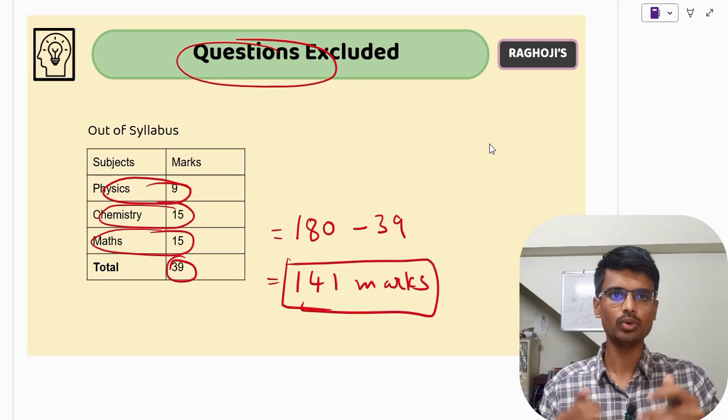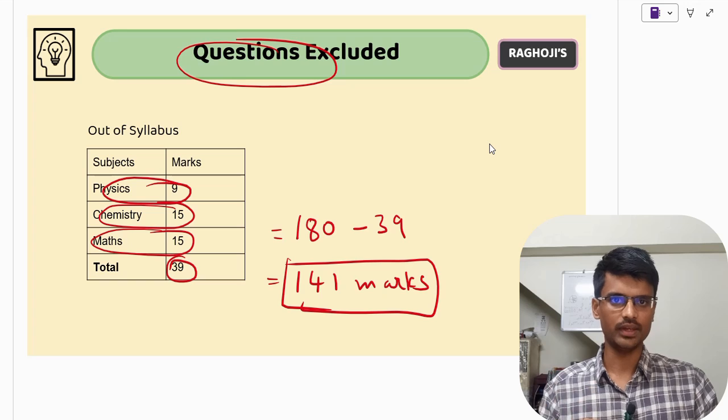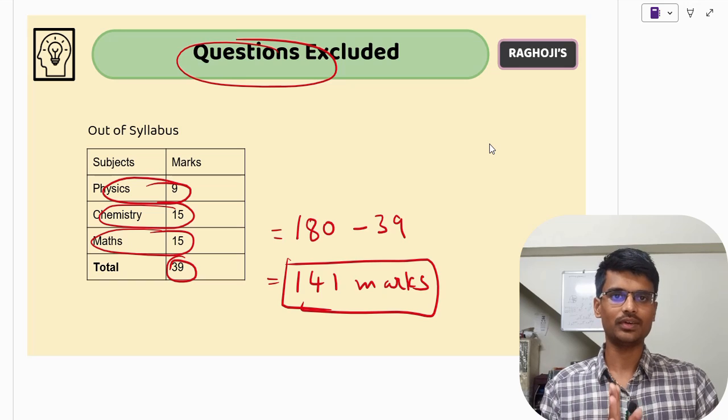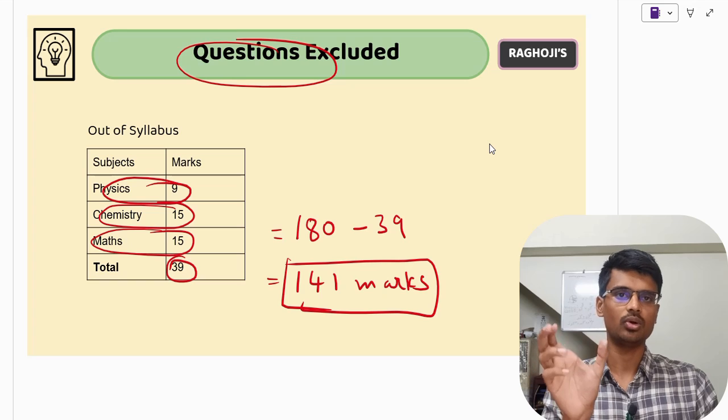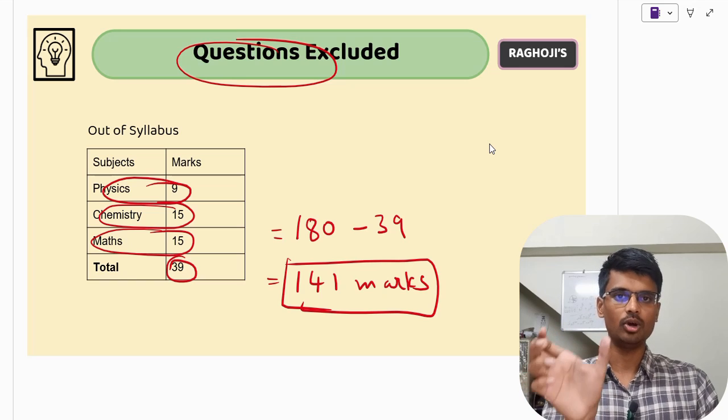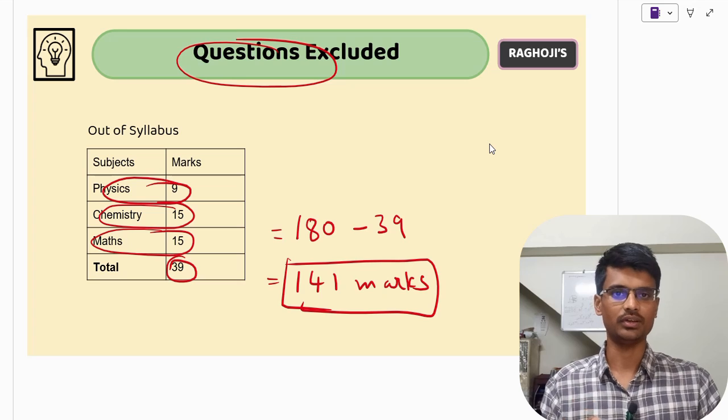Coming to the latest update from KEA, as you know yesterday they have released the provisional answer key. For each subject they have mentioned the questions that are excluded. In physics you have 9 questions that were excluded, in chemistry 15 and maths 15. So in total 39 questions are excluded. You have 180 questions in that 39 questions are gone. So your KCET is now only for 141 marks.